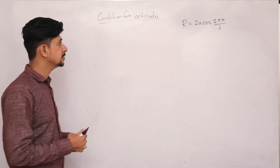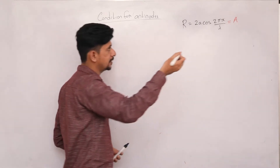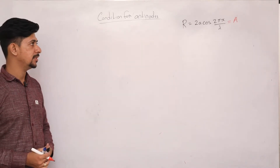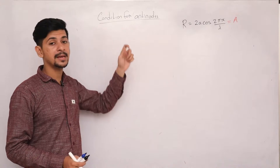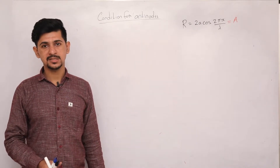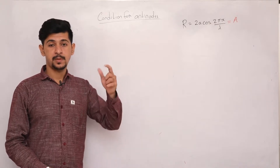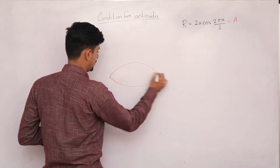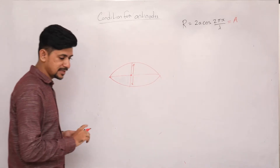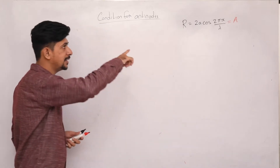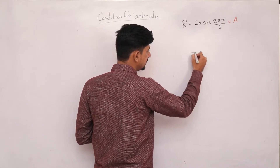Let's look at conditions for anti-nodes. The resultant amplitude of the resultant wave — when will a condition become an anti-node? When we talk about anti-nodes, we are talking about the particle which is vibrating with maximum displacement from the mean position. This particle has maximum displacement from the mean position.